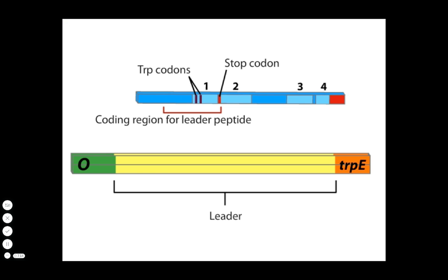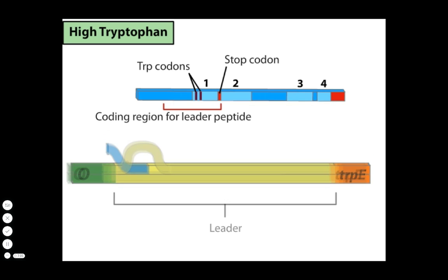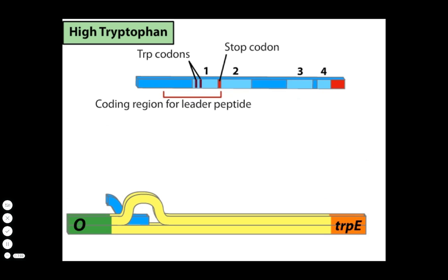If the cell has plenty of tryptophan, it will also have plenty of tRNAs charged with tryptophan to translate the tryptophan codons. A closer look at transcription of the leader shows why a high level of tryptophan in the cell results in attenuation.